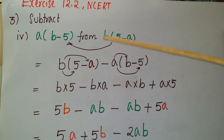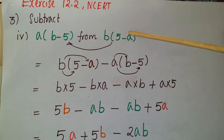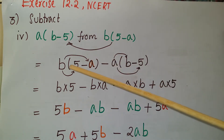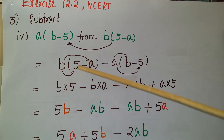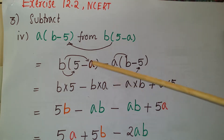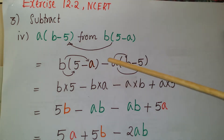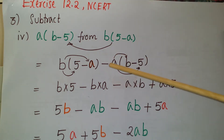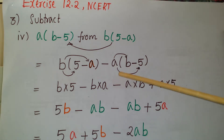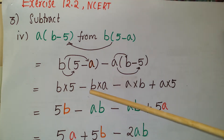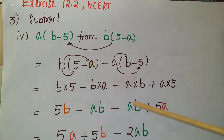We write b into 5 minus a, minus a into b minus 5, because we have to subtract from this expression to this expression. Now just multiply with b here: b into 5, then b into a. Minus a into b, and minus of minus is plus, so plus a into 5.